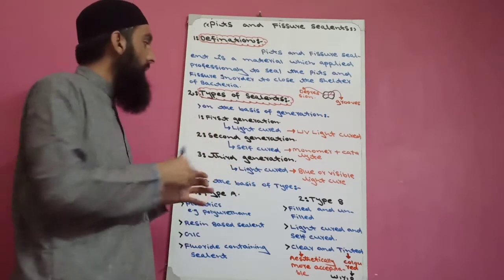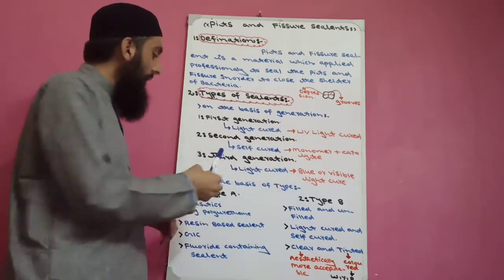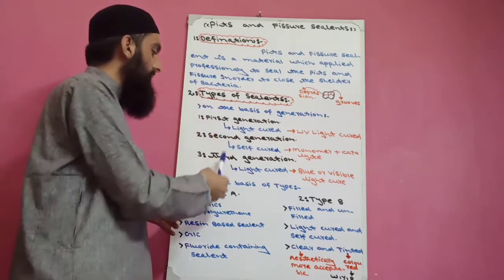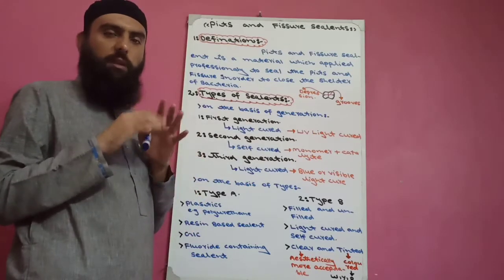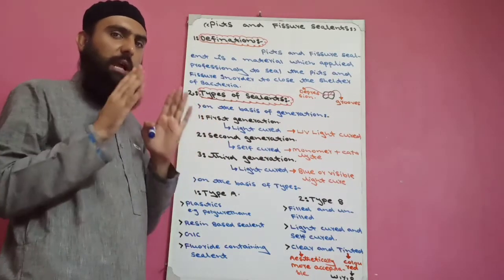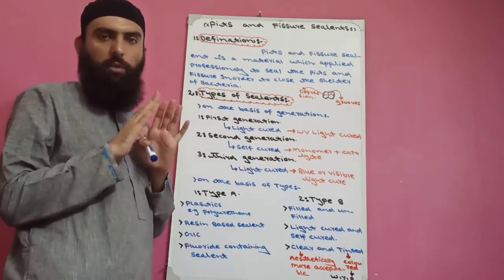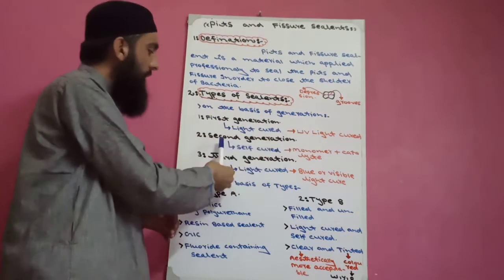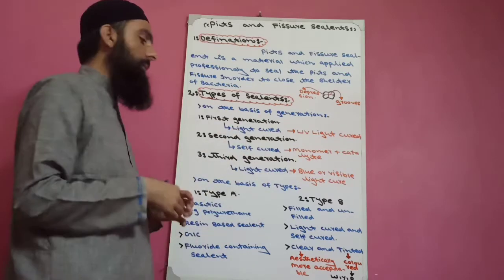The third generation pits and fissure sealant is also light-cured, but what is the difference between first and third generation? Both are light-cured, but first generation is ultraviolet light cure and third generation is blue light cure. Second generation is self-cure, meaning it consists of monomer plus catalyst — without light, due to the catalyst, polymerization of monomers occurs and the material sets.